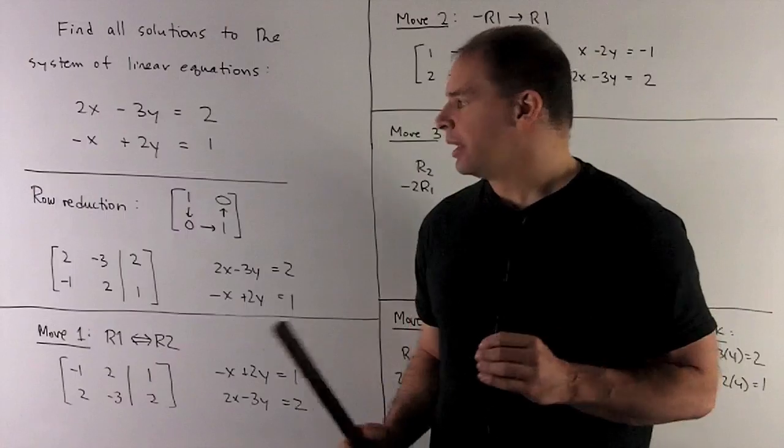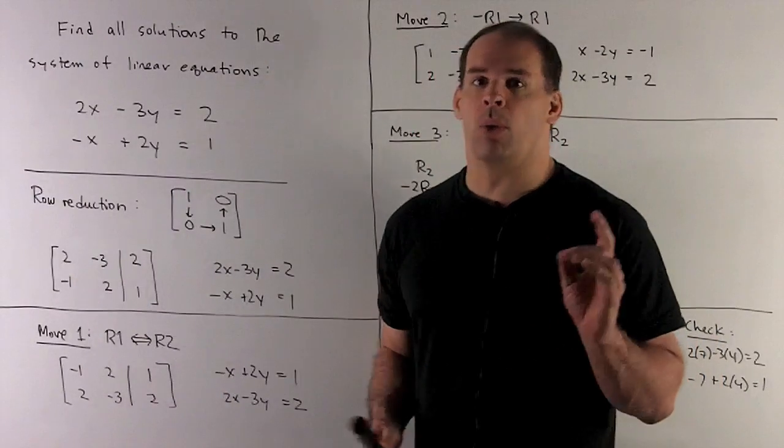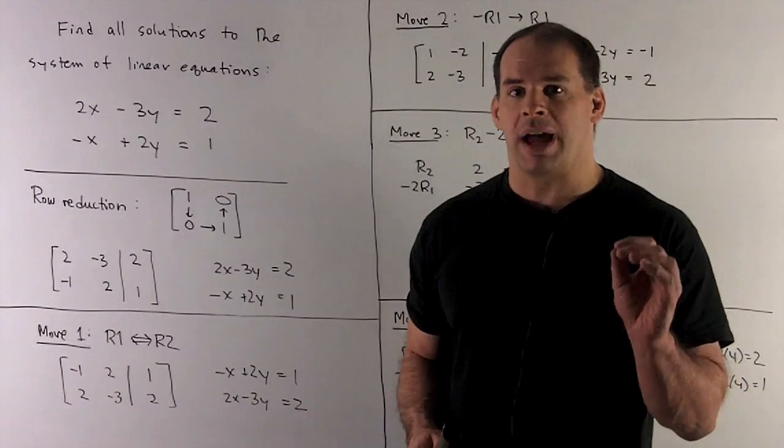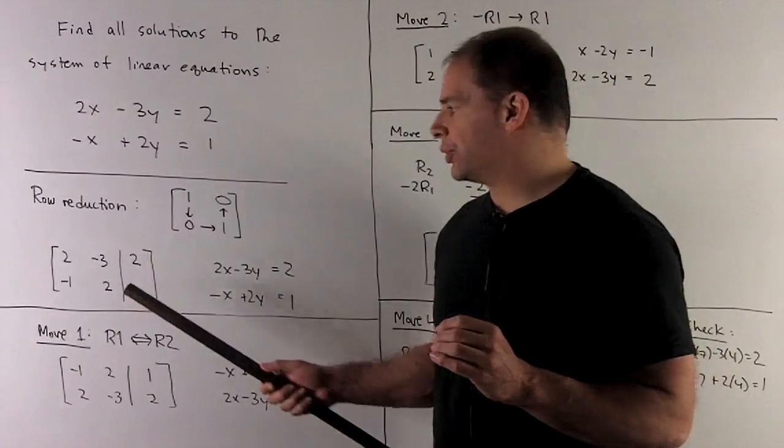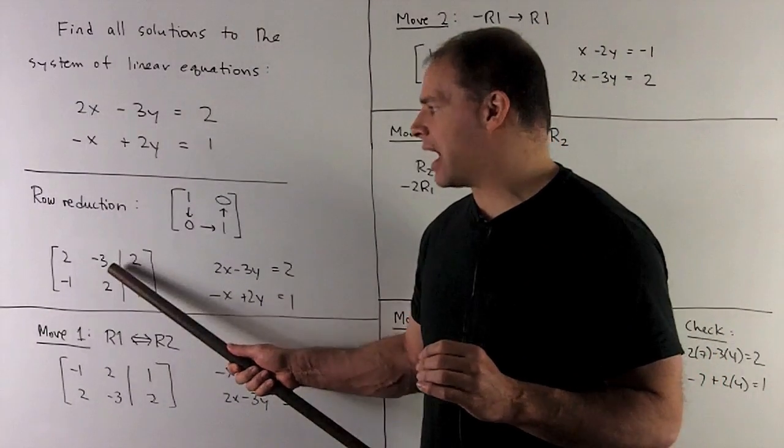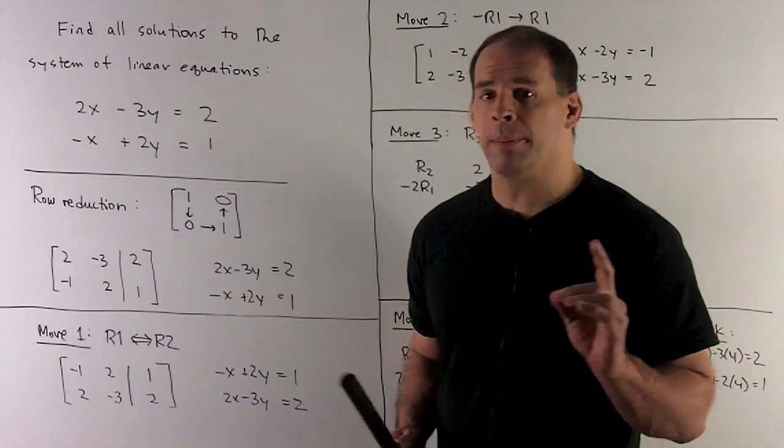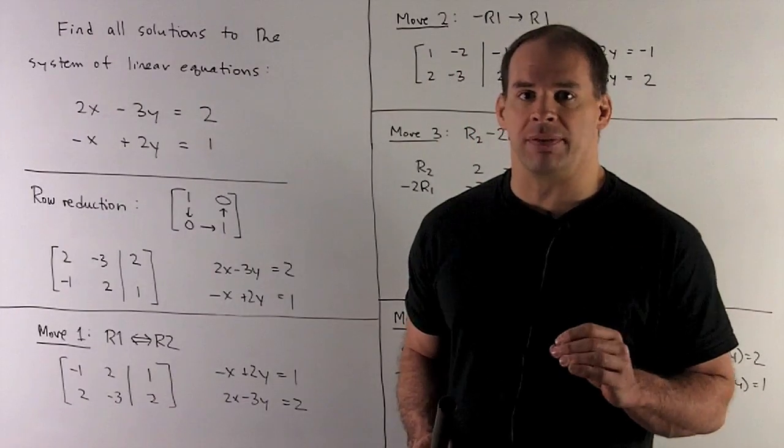So our first step is to try to turn this 2 into a 1. We could multiply through our first row by a half. But if you notice, that introduces a minus 3 halves into the second column, that entry there. So let's try something different.